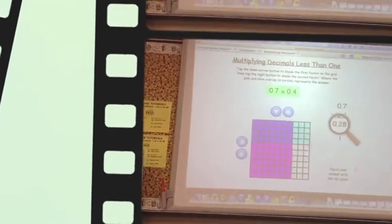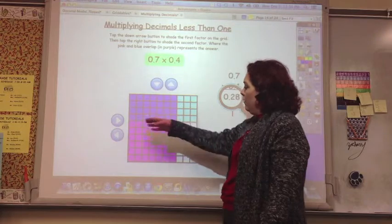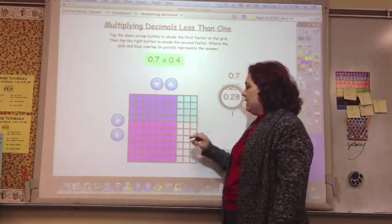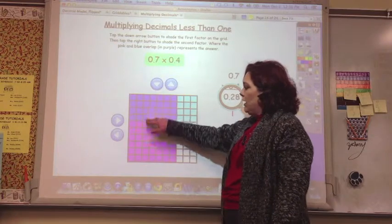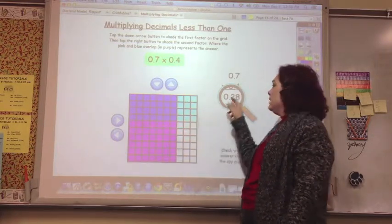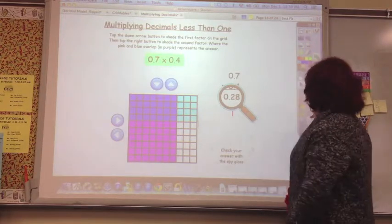So we would have 4 going down this way or 4 coming across this way, 4 tenths. And then 7 tenths coming across this way. And the double shaded is 7 times 4, which is 28, 28 hundredths. And that's our answer, 28 hundredths.